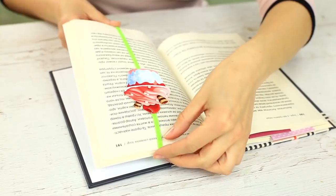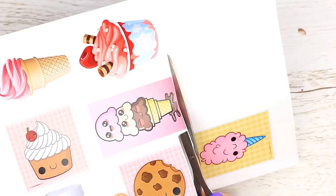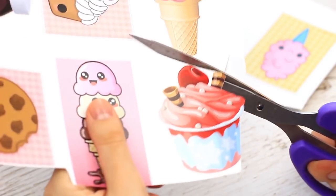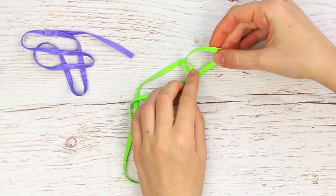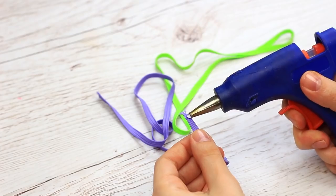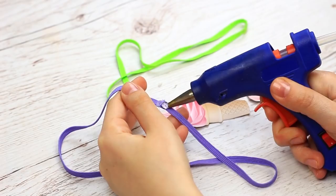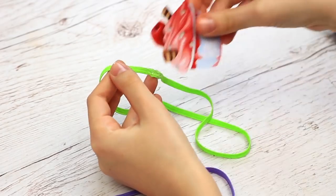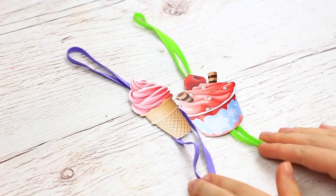Do you think ice cream bookmarks sound too weird? No way! Let's prove it! Cut out ice cream pictures. You can buy them in a supply store or print them out yourself. Hot glue a colored elastic band. Attach the picture to the seam. The funny ice cream bookmarks can be ready in a few minutes. Use them to save the right page.